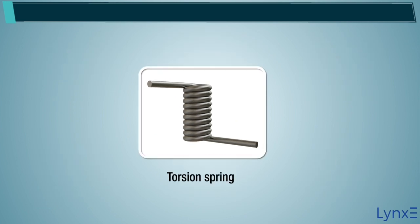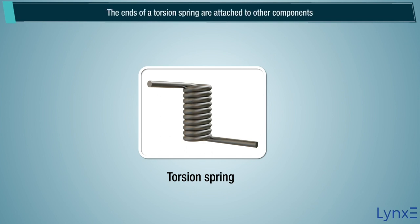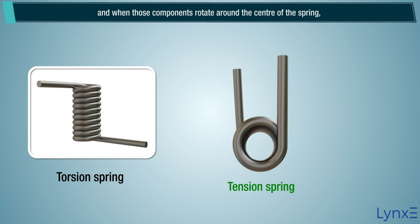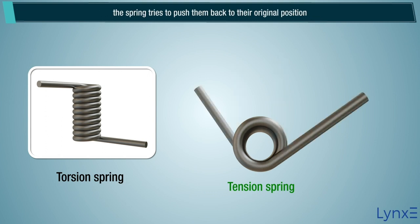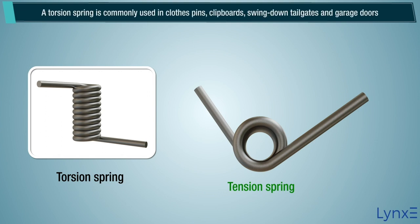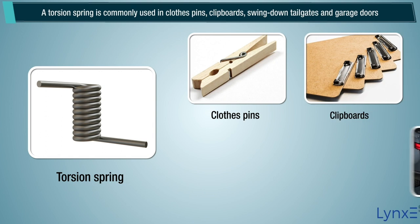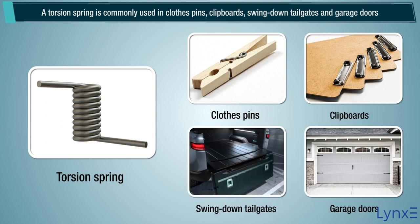Torsion springs are helical springs that exert a torque or rotary force. The ends of a torsion spring are attached to other components, and when those components rotate around the center of the spring, the spring tries to push them back to their original position. A torsion spring is commonly used in clothes pins, clipboards, swing down tailgates, and garage doors.